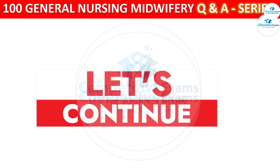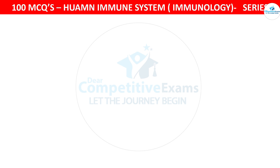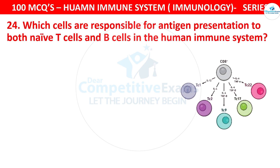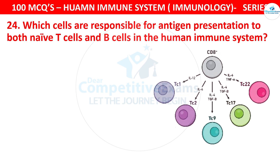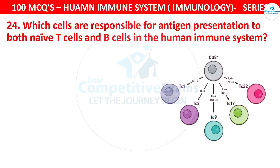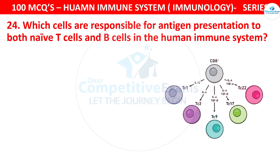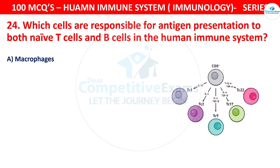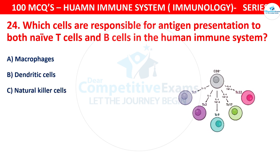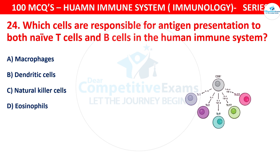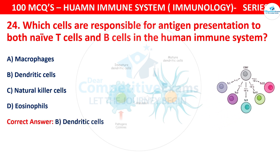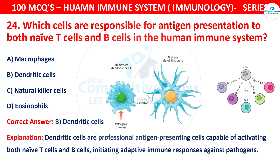Question 24: Which cells are responsible for antigen presentation to both naive T cells and B cells in the human immune system? Your options are Macrophages, Dendritic cells, Natural killer cells, or Eosinophils. The correct answer is B, that is Dendritic cells. Dendritic cells are professional antigen-presenting cells capable of activating both naive T cells and B cells, initiating adaptive immune responses against pathogens.